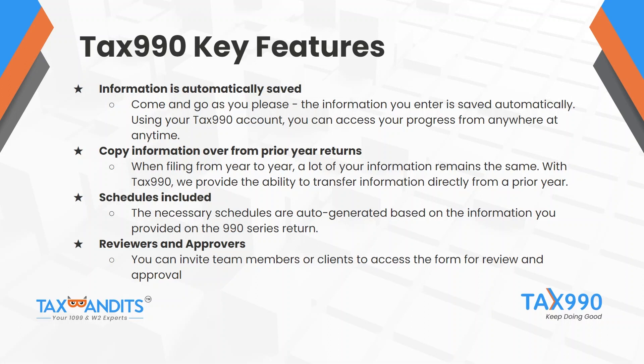We also understand it's not always easy to know what additional information is required on a return. When you complete a return with Tax 990, we help determine what schedules are required based on the information provided on the form. The schedules required will automatically generate for you to complete, and only the necessary parts of the schedule will appear so you're not completing information that's not required. For example, if you select on the 990 form that your organization is a 501(c)(3), Page 1 of Schedule A will generate automatically, and once you choose your reason for public charity status, the necessary additional parts of the schedule will be enabled.